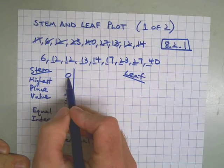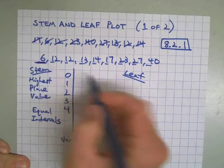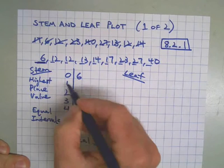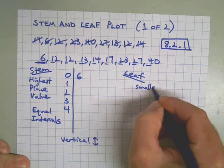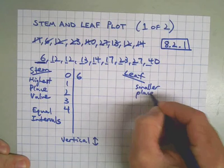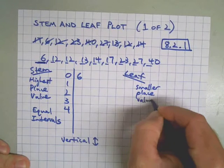So 0 in the tens place, this is this number, right? The number 6 has no tens, but 6 ones. So this is going to be the smaller place value in our number list. That's the leaves.